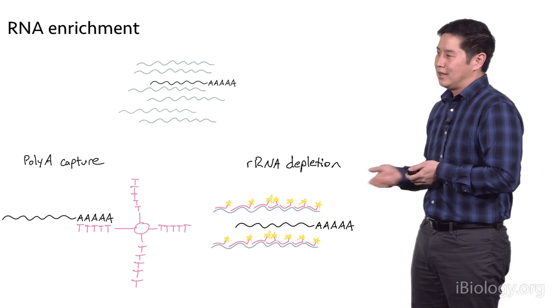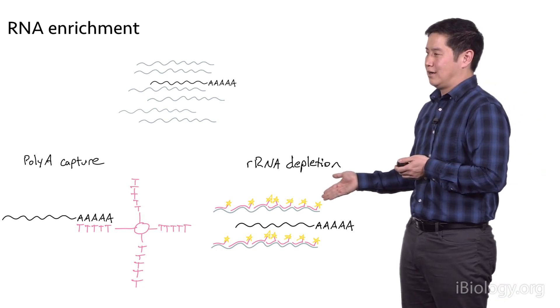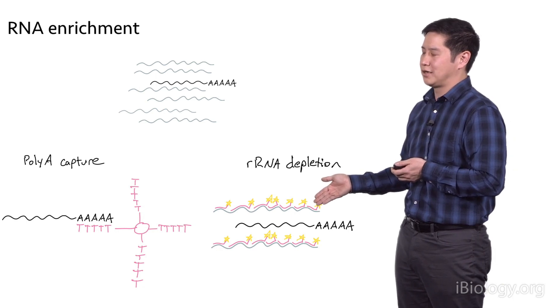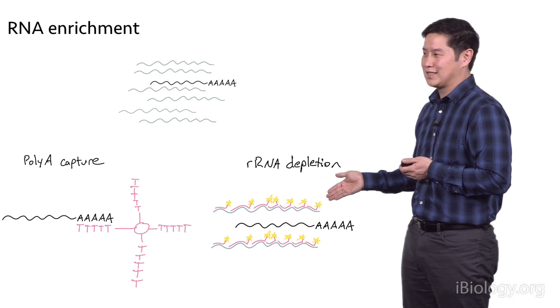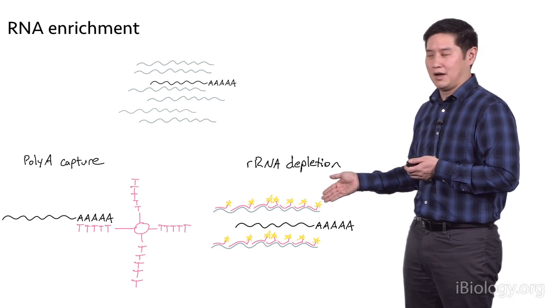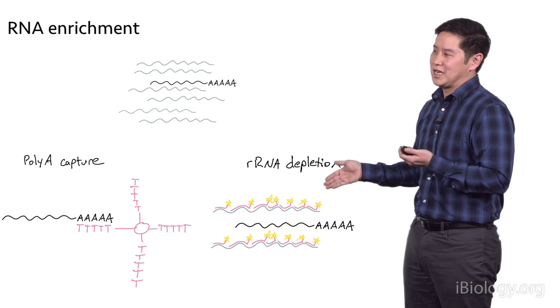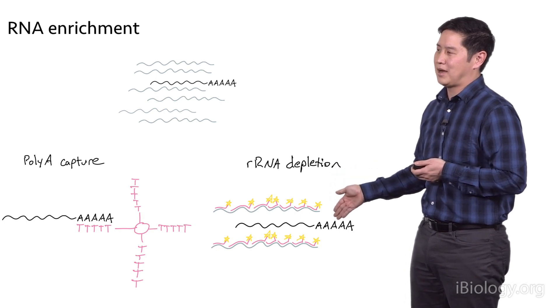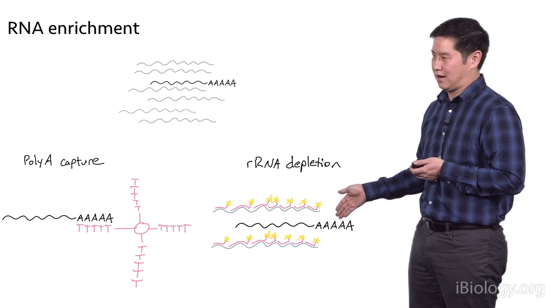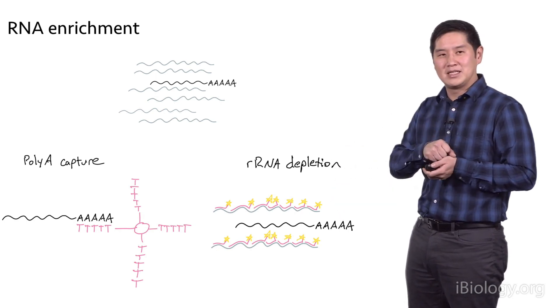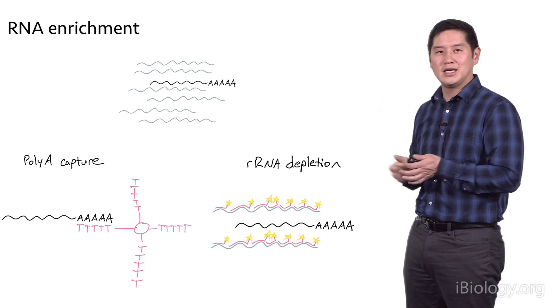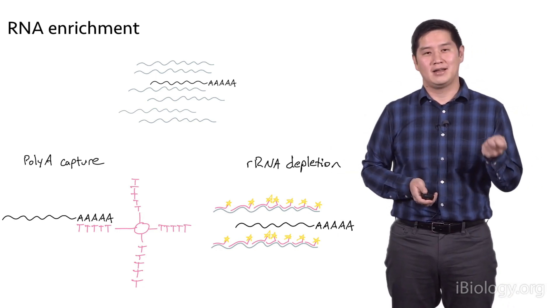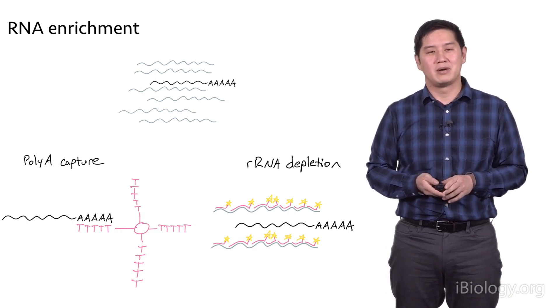The most common method right now is using a DNA panel of probes that will bind to your ribosomal RNAs and also have a biotin handle on the end. You go through a hybridization reaction where these probes will bind to ribosomal RNA but not to poly-A RNA. Then you use magnetic beads to pull these out of the solution, and you're left with poly-A messenger RNA in your tube that you can go through library preparation.